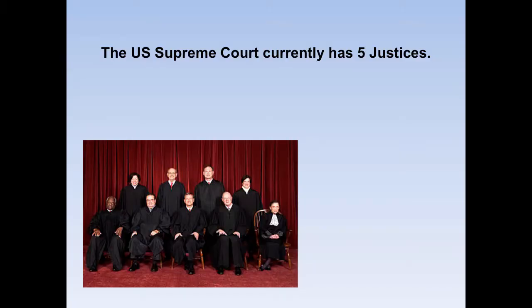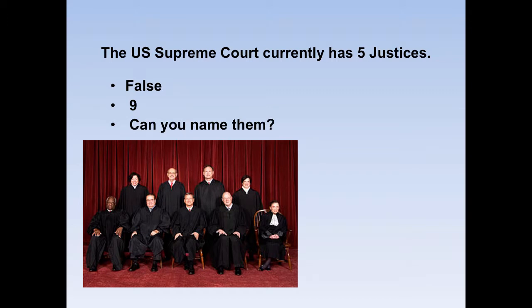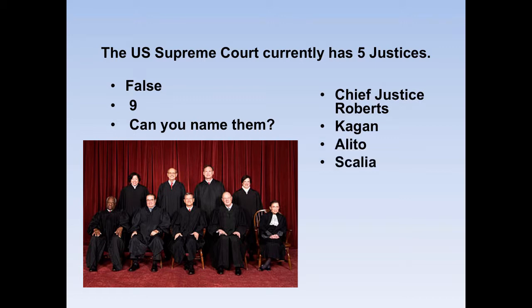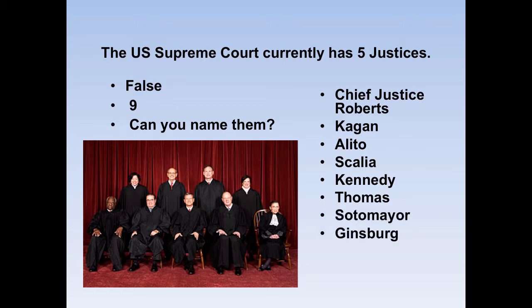Speaking of our Supreme Court — it currently has nine justices. Can you name them? Let's start in the middle: that's Chief Justice John Roberts. Elena Kagan is the shorter lady on the back row. Justice Alito is the tallest fellow. Justice Scalia is just to Justice Roberts' right — the older white Italian gentleman. Justice Kennedy is sitting on the other side of the Chief Justice. Justice Thomas is the black gentleman on the far left. Justice Sotomayor is the other woman standing in the back. Justice Ginsburg is the lady sitting in the chair. And Justice Stephen Breyer is the shorter of the two gentlemen on the back row. That is our current Supreme Court.